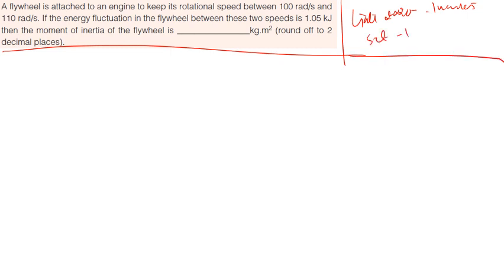Next question from theory of machine which has been asked in GATE 2020 for one marks set one. Question: A flywheel is attached to an engine to keep its rotation speed between 100 radians per second and 110 radians per second. If the energy fluctuation between these two speeds is 1.05 kilojoule, then the moment of inertia of the flywheel.